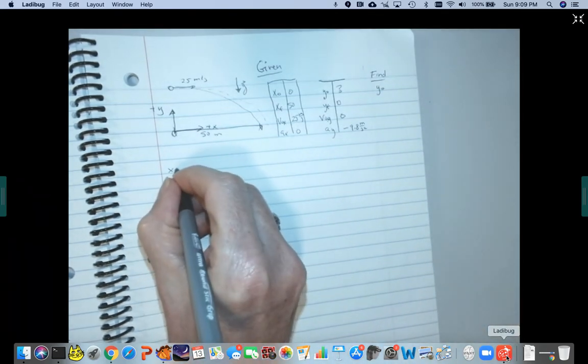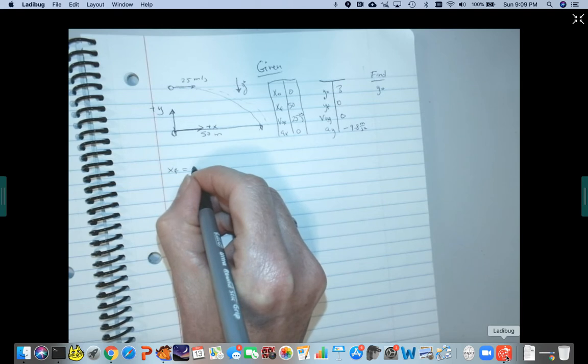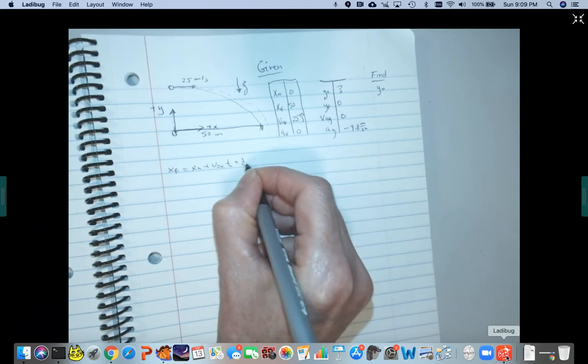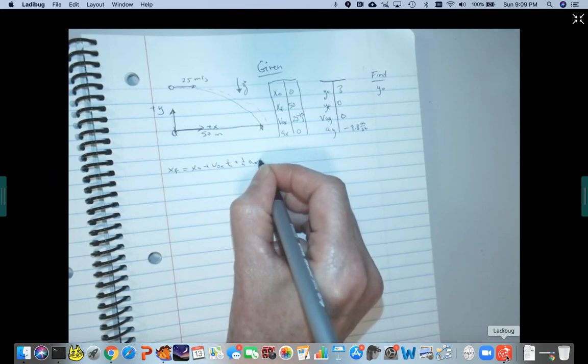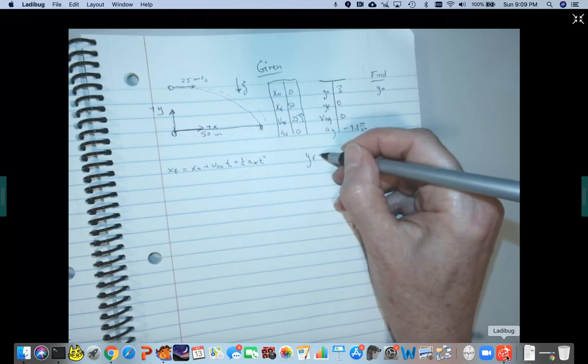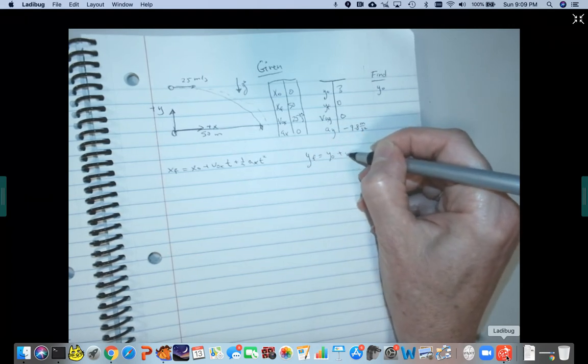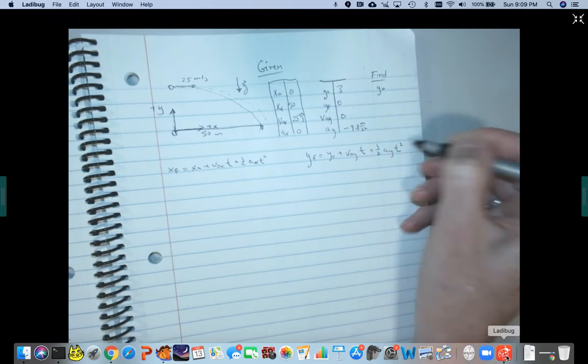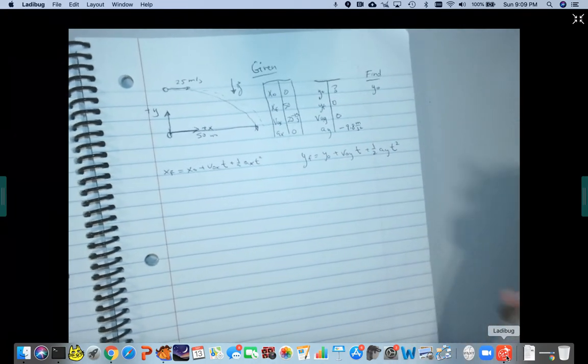So I'm going to write my x position equation. So x final equals x0 plus v0x t plus one half ax t squared. And we can put y down as well, too. We're going to need that. y final is y initial plus v0y t plus one half ay t squared. And if you weren't sure which way to go, it's not bad to put them both down.